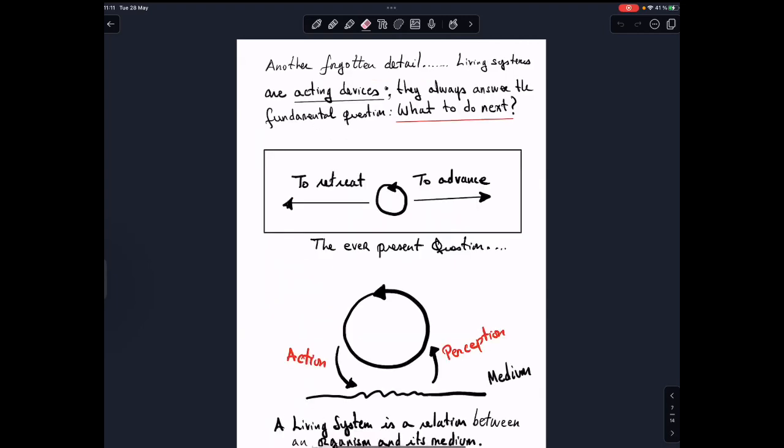And because essentially a living system, also a very important point here, a living system is before anything else, an acting device. They need to act. Perhaps they are the self-fabricating device, but they exist in a universe that demands action. And a living system always must answer the fundamental question, what to do next? And this is valid for a bacteria, or for us, or for a whale, for everything. And in some sense, the fundamental question of a living system is to retreat or to advance. This is the ever-present question.